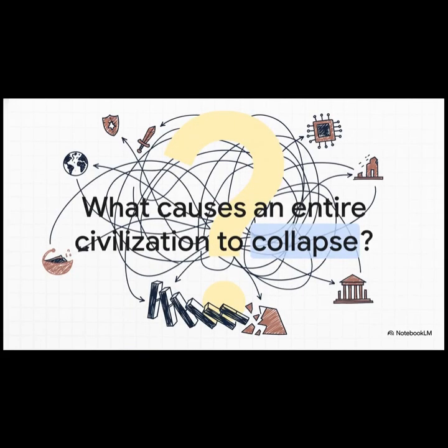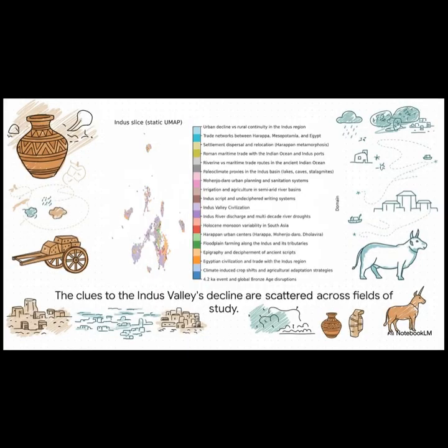Let's jump right in with a huge question, one that has fascinated historians forever. What really causes a great civilization to fall apart? It's never just one thing. It's always a cascade, a tangled web of causes all feeding into each other. Take the ancient Indus Valley civilization, for instance. The reasons for its decline are a perfect example of this puzzle.